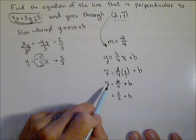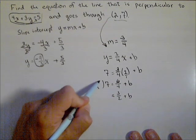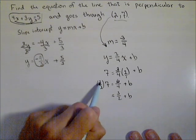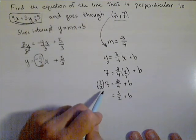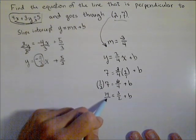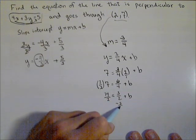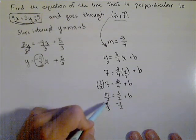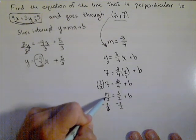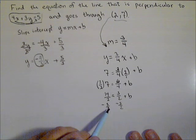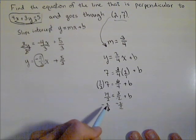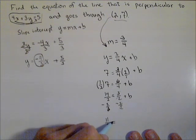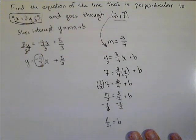It might be easier to convert the 7 in terms of halves as well. So multiply by 2 over 2. That's going to give us 7 times 2 is 14 over 2. So now we can subtract 3 halves from both sides. So we have 14 halves minus 3 halves. They'll cancel here. So 14 minus 3 is 11 because we have our common denominator. So 11 halves is our b.